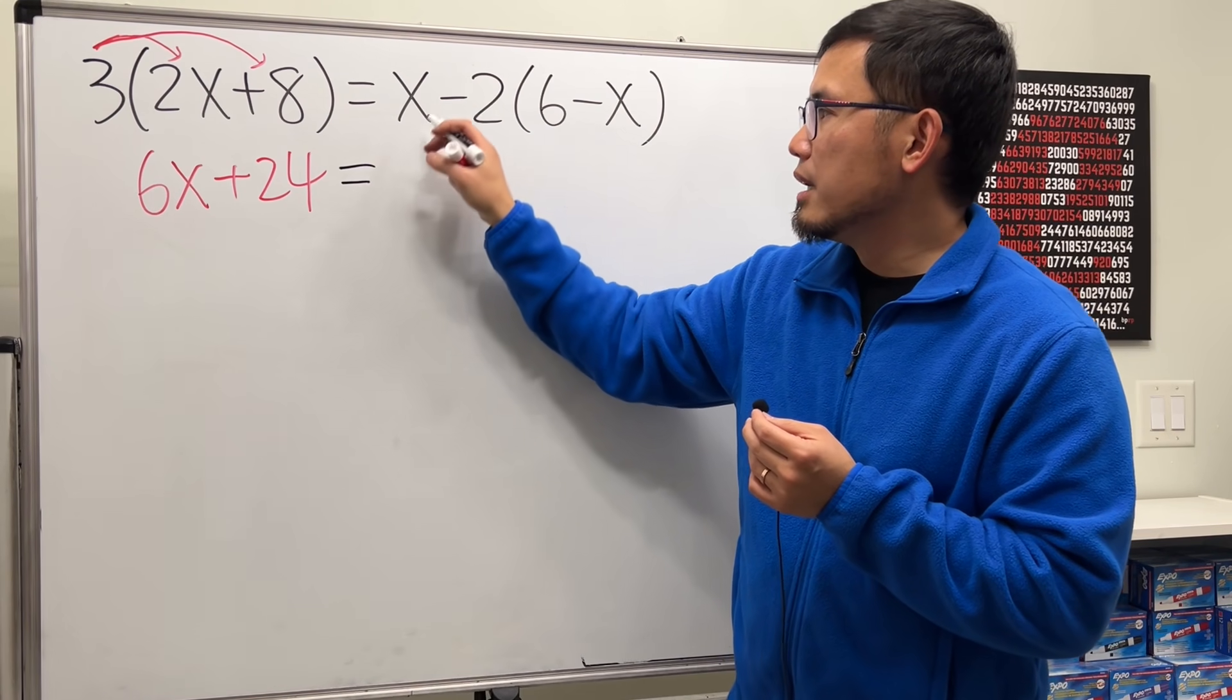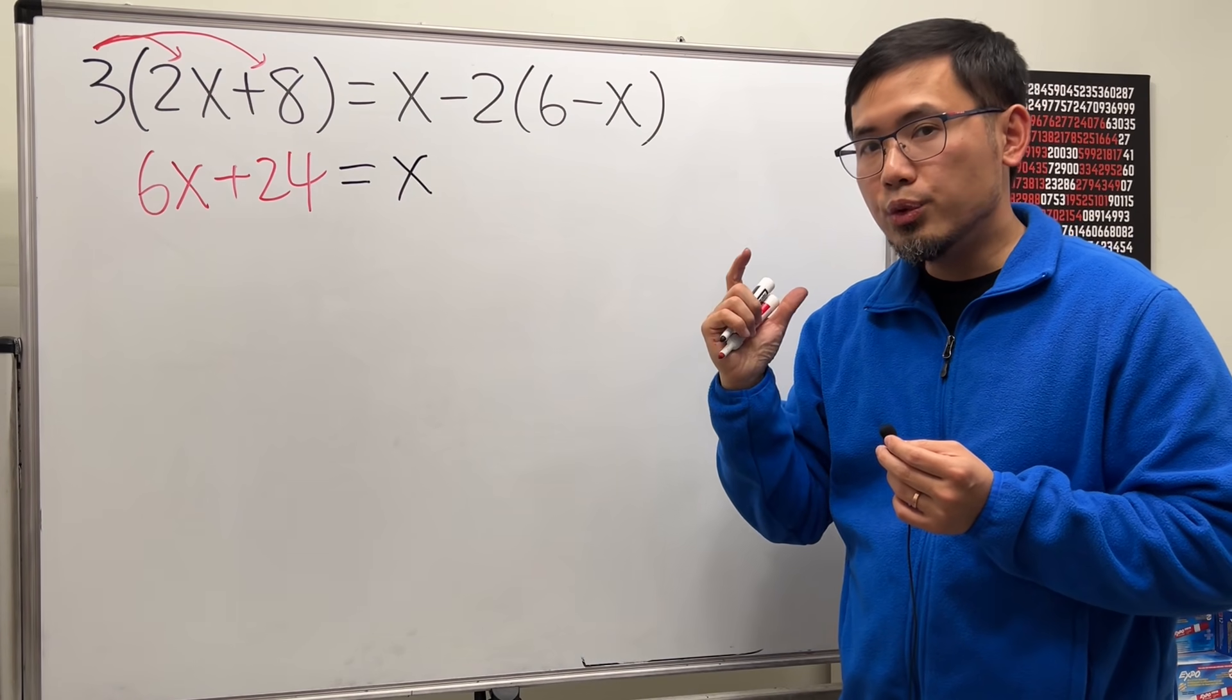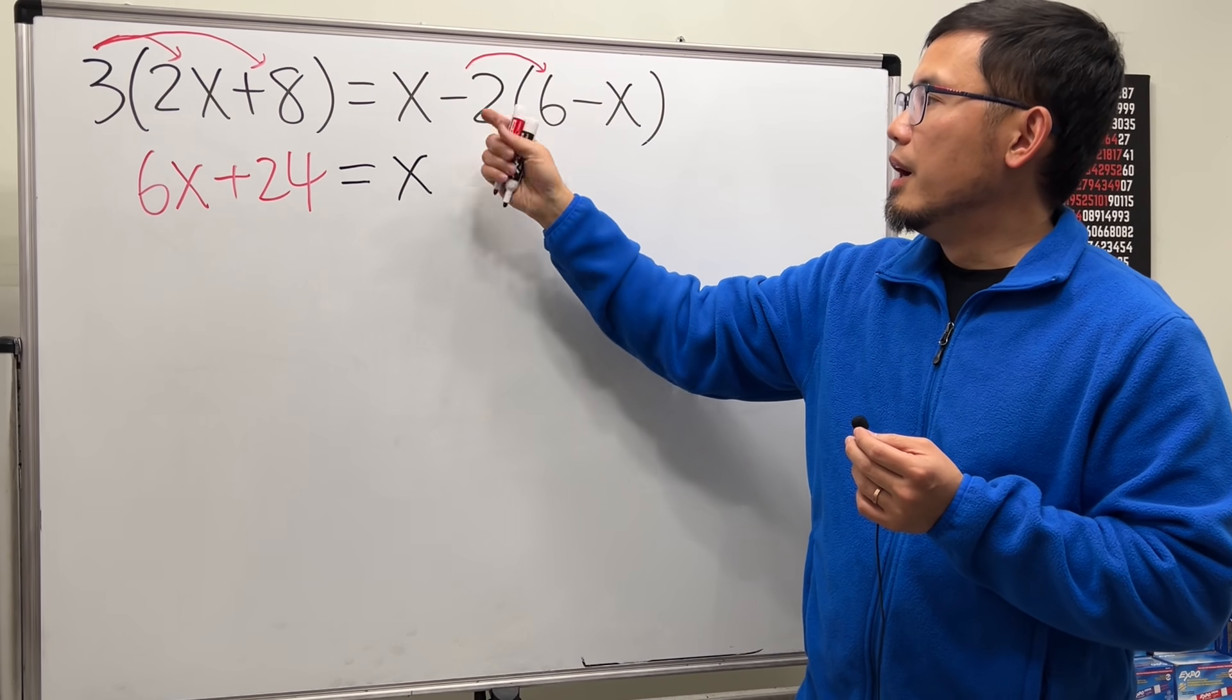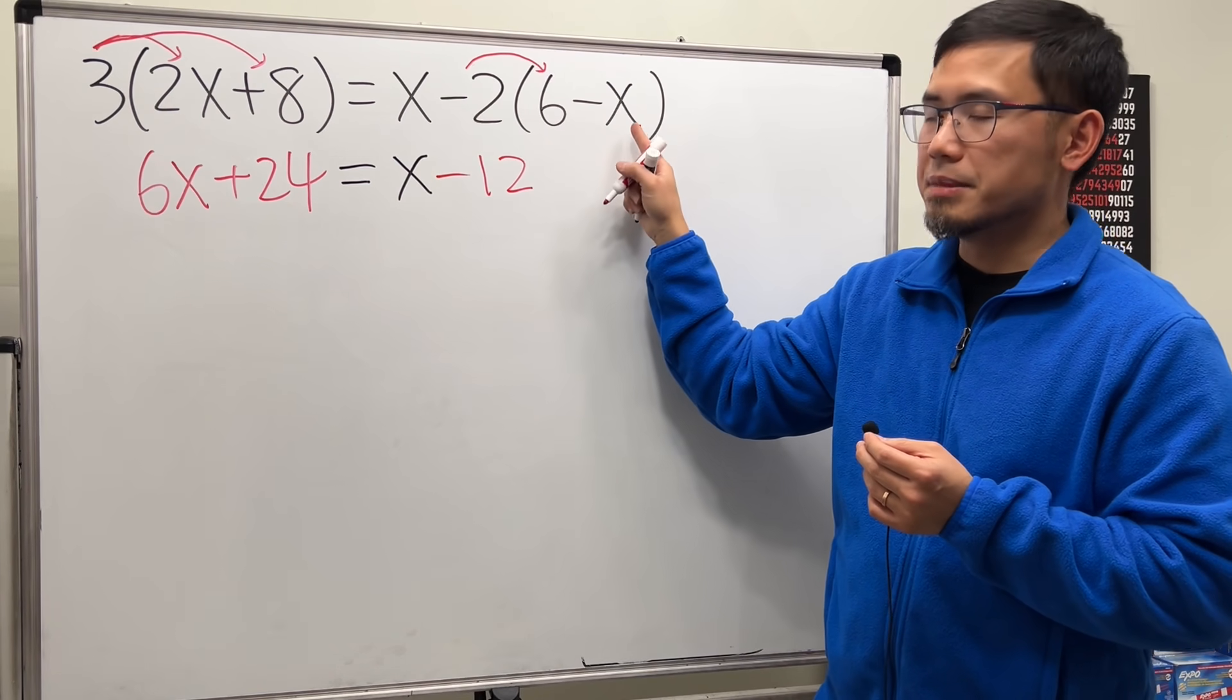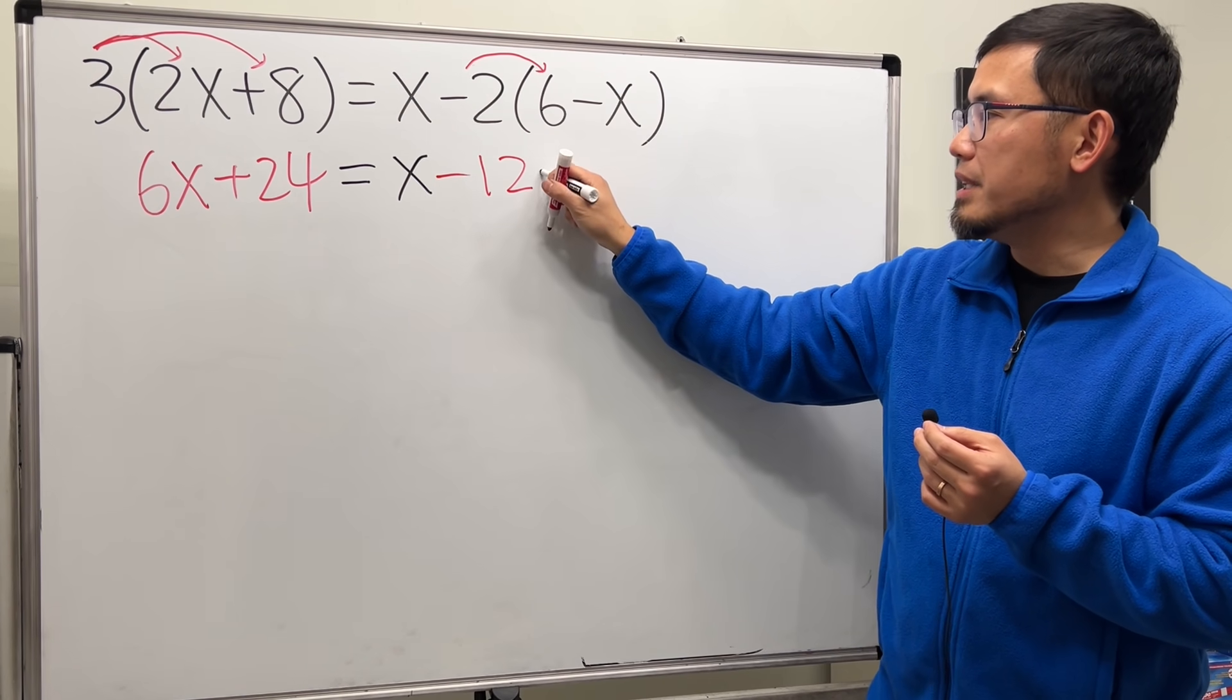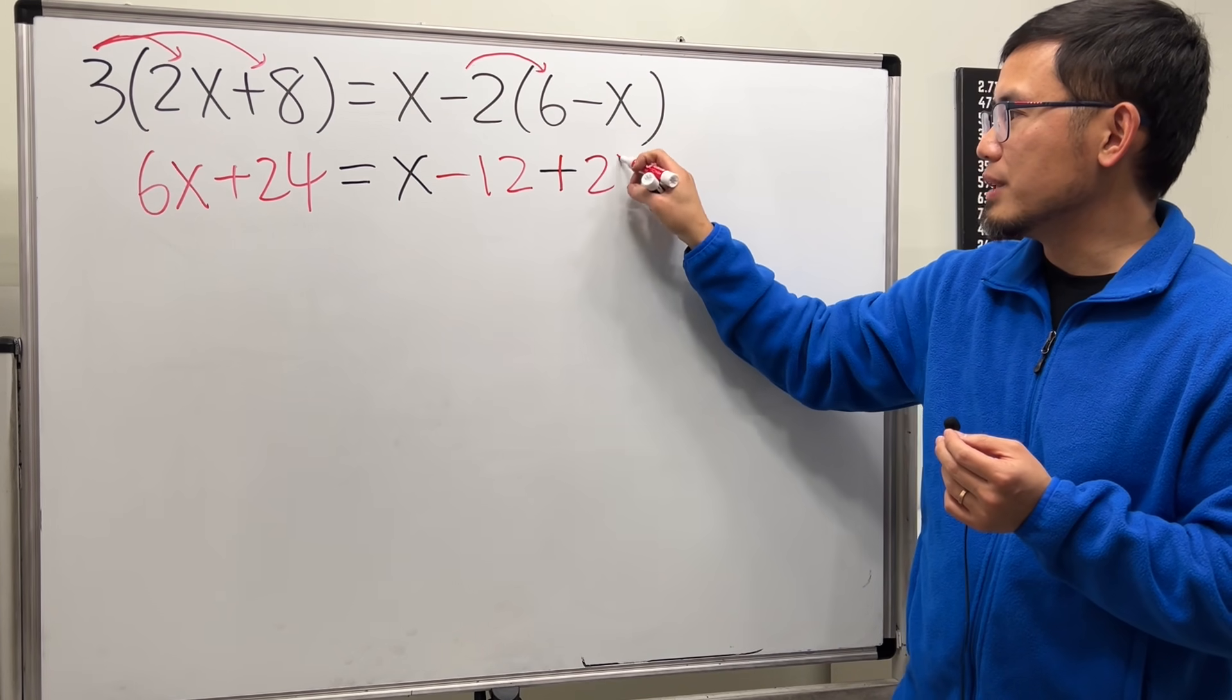And we continue. Write down the equal sign, and the x stays. Here we have a negative 2 in front of this parenthesis. So we are going to take the negative 2, distribute in. Negative 2 times 6 is negative 12. And then negative 2 times negative x. And you have to remember that negative times negative becomes a positive. So we have a positive 2 times x, which is 2x.